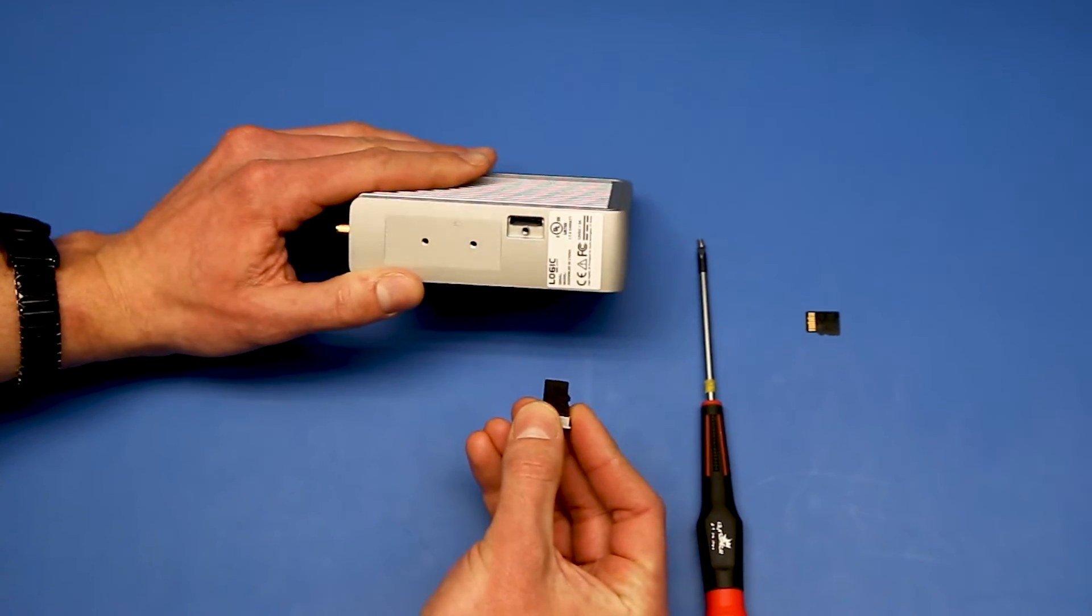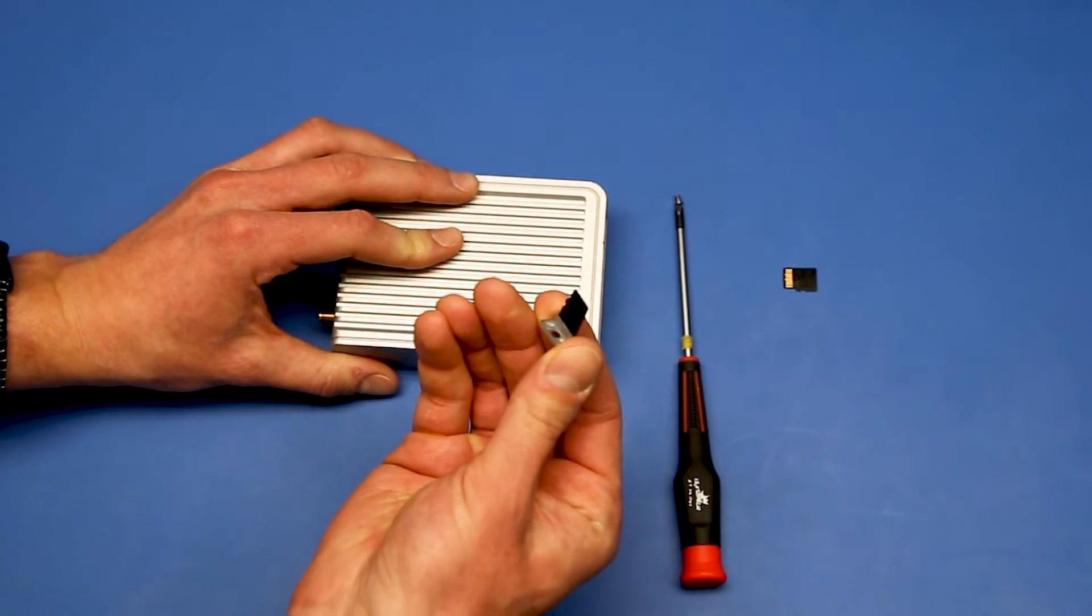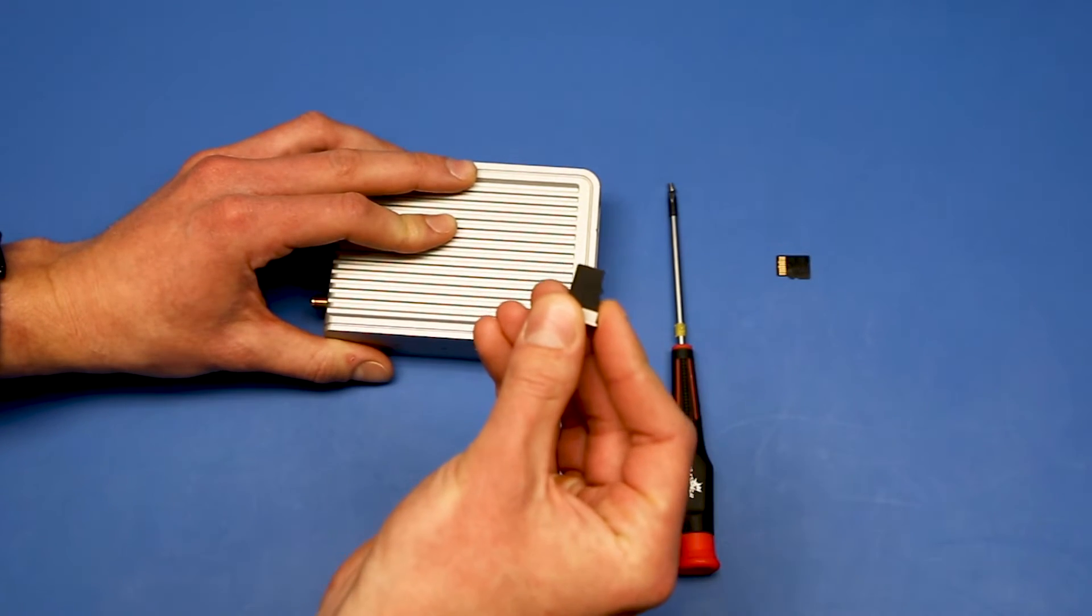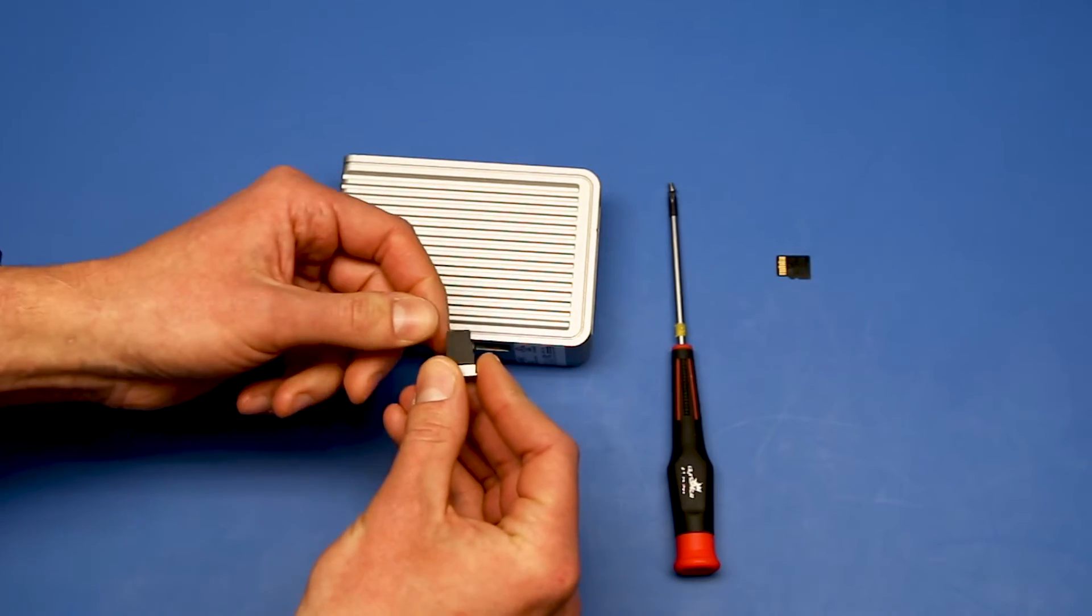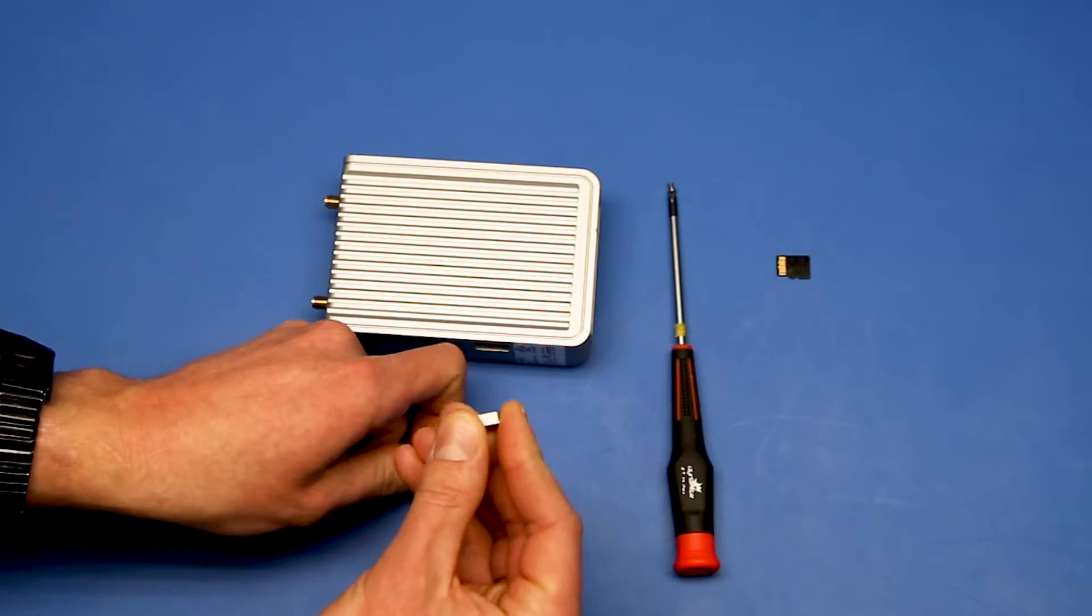If this is the first time you're installing an SD card, there will be a blank card inside. This is just a piece of plastic. Make note of the orientation; that's going to be important when you go to add your card. You can remove this piece of plastic and set it aside.